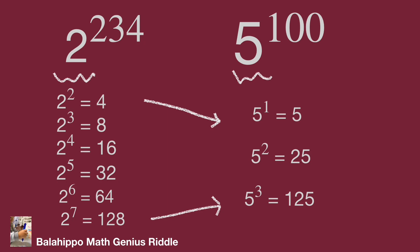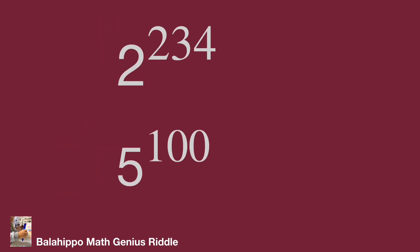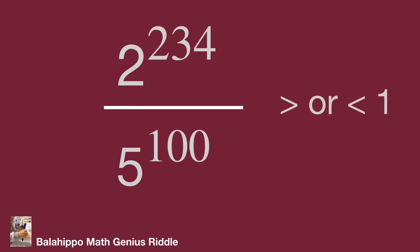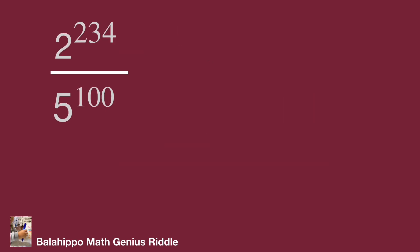After that, change the base using these numbers to find which one is bigger. The basic idea is: take 2 power of 234 divided by 5 power of 100, then determine if the value is bigger or less than 1, and we can judge which one is bigger. The exponential rule is: x to the power of m times n equals the quantity x to the power of m, to the power of n.